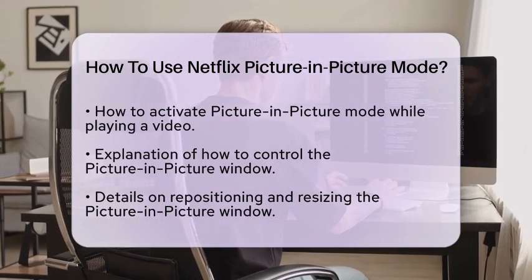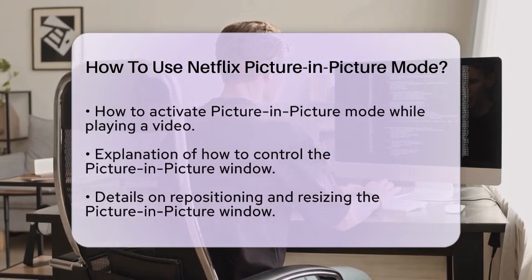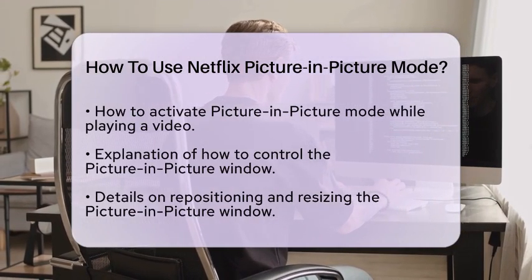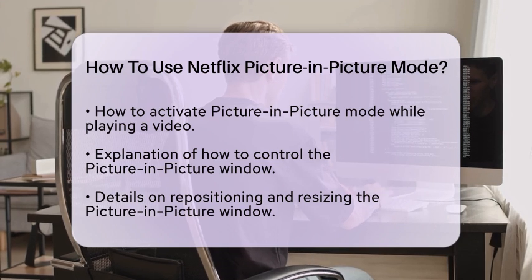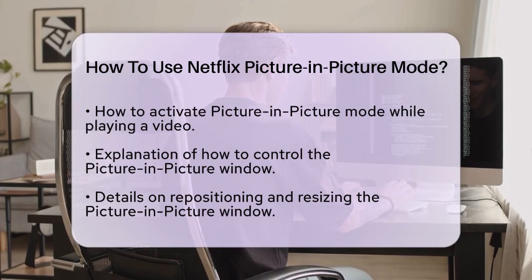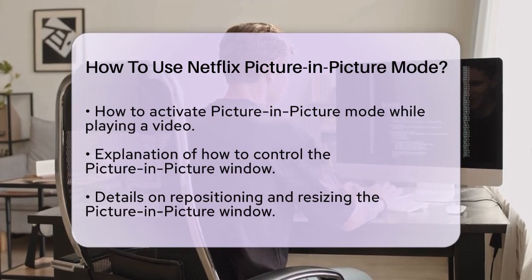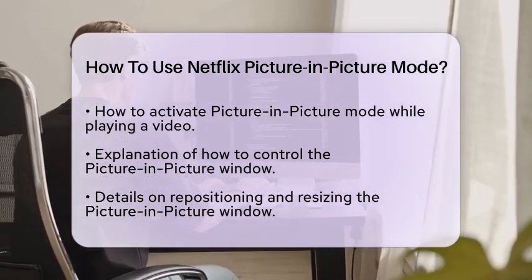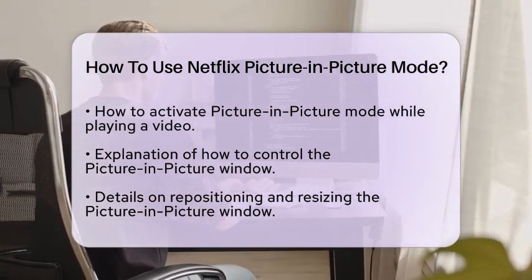Controlling the Picture-in-Picture window is easy. Tap the window to access playback controls like pause, play, skip forward or backward by 10 seconds, and return to full screen. You can also drag the window to reposition it on your screen. If you want to resize the window, use a two-finger pinch gesture.